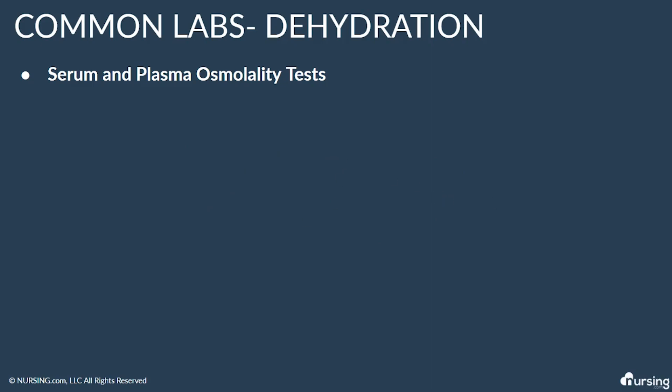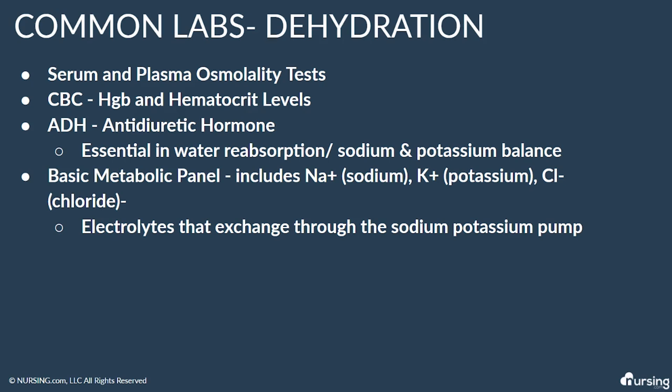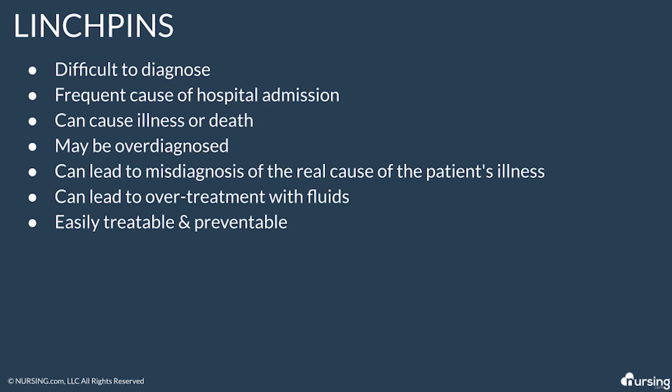Diagnosis requires multiple parameters or labs. Labs that are looked at include serum and plasma osmolality tests, CBC, hemoglobin and hematocrit levels, and ADH — antidiuretic hormone — which plays an essential role in water reabsorption and therefore sodium and potassium balance. BUN and creatinine are also evaluated as they are indicative of kidney function and fluid and electrolyte balance. If the kidney isn't functioning properly, BUN and creatinine will be increased as they are not filtered through the kidneys and remain in the blood.